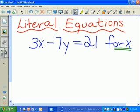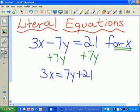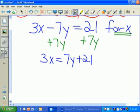First, we want to isolate the 3x. We'll do that by adding 7y to each side, which gives us 3x equals 7y plus 21. Then we'll divide each term by 3 to isolate the x, which was our ultimate goal.